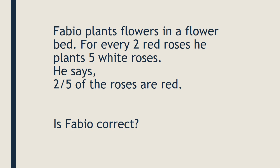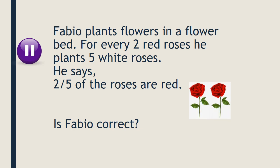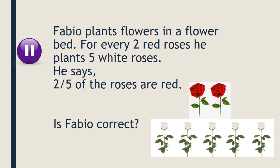Fabio plants flowers in a flower bed. For every two red roses he plants five white roses. He says two fifths of the roses are red. Is Fabio correct? Pause the video and answer. For every two red roses there are five white roses, giving us a total of seven roses. Two out of seven are red. So the fraction is two sevenths, not two fifths.